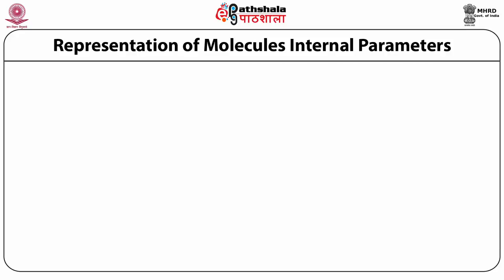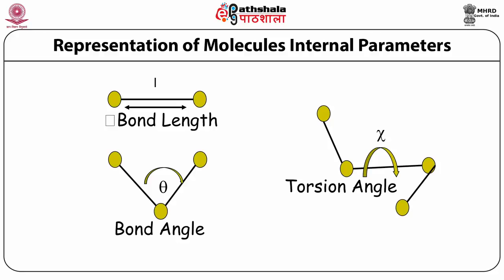There are other ways to represent a molecule. For example, I can specify all its bond lengths, all the bond angles, and something called the torsional angle. A collection of bond lengths, bond angles, and torsional angles would completely specify the molecule. However, in this case you need only 3n minus six parameters if you have n atoms — which means there are six missing parameters. What are they?